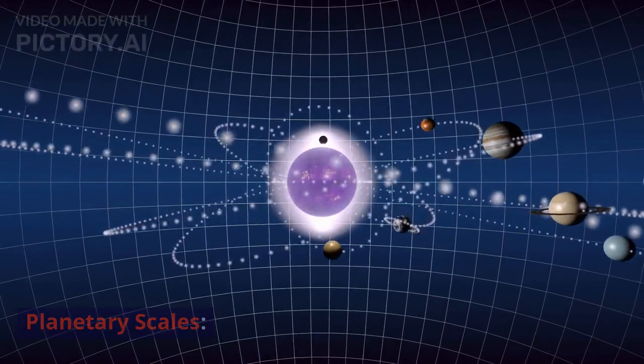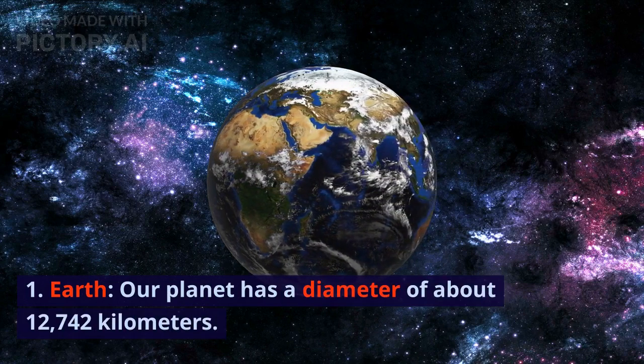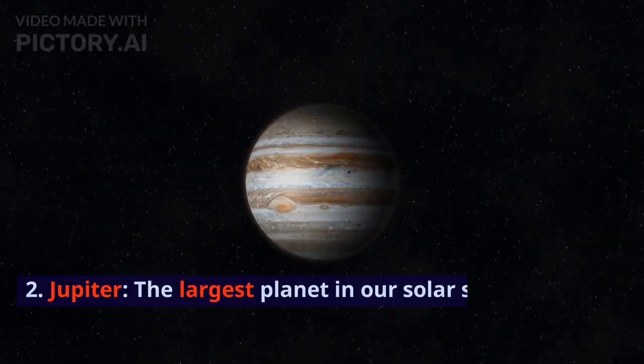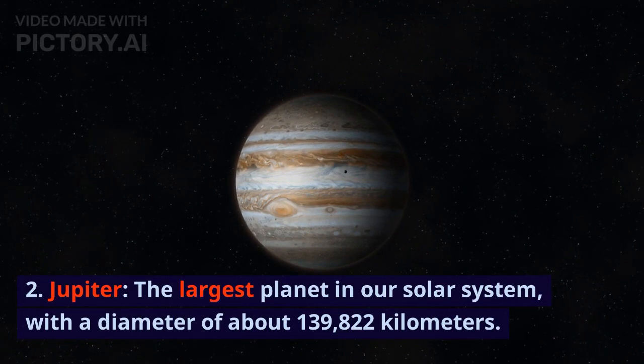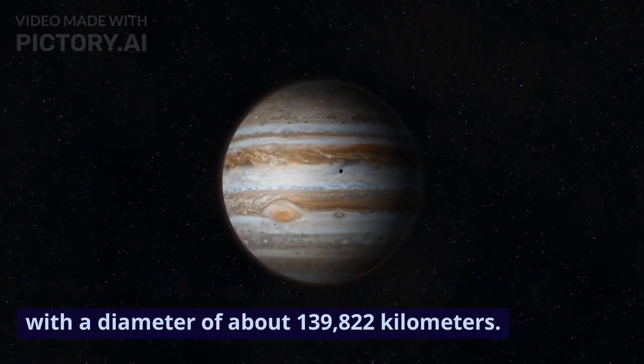Planetary Scales: 1. Earth - our planet has a diameter of about 12,742 kilometers. 2. Jupiter - the largest planet in our solar system, with a diameter of about 139,822 kilometers.